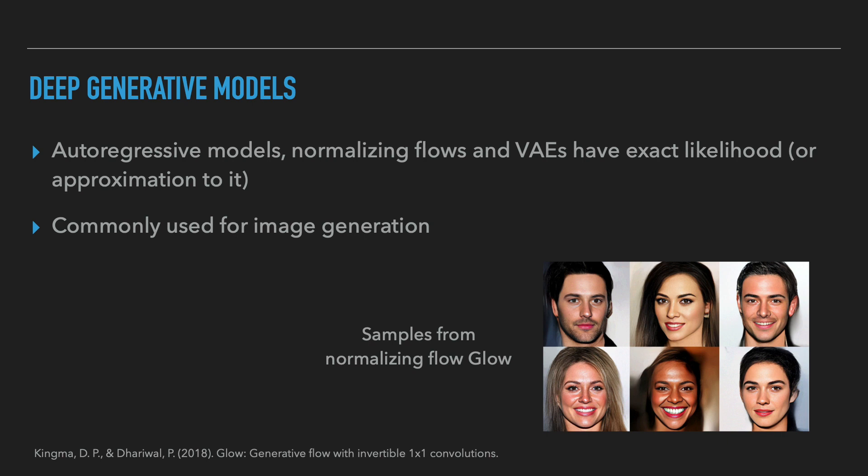So autoregressive models, VAEs, and normalizing flows all have either tractable exact likelihood or an approximation to it. The most common benchmark for deep generative models is the generation of natural images on datasets like MNIST, CIFAR, CelebA, or ImageNet. All three model classes achieve strong performance in image generation. For example, on the slide are samples from a normalizing flow model, GLOW, trained on CelebA — the Celebrity Faces dataset.